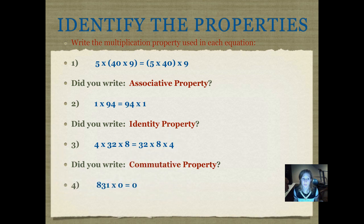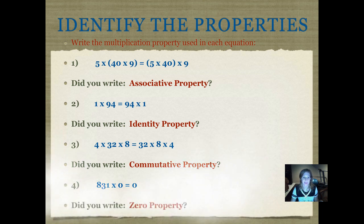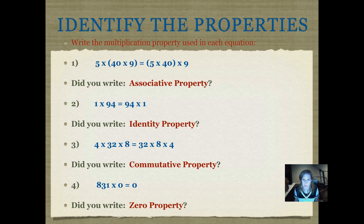Here's our last one. Number four: 831 times 0 equals 0. What property is this? Did you write zero property? Anytime you multiply a number by 0, you get 0. That's the zero property.